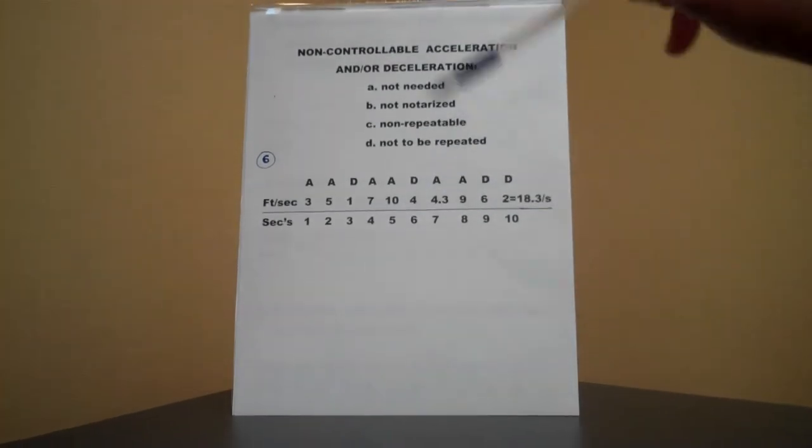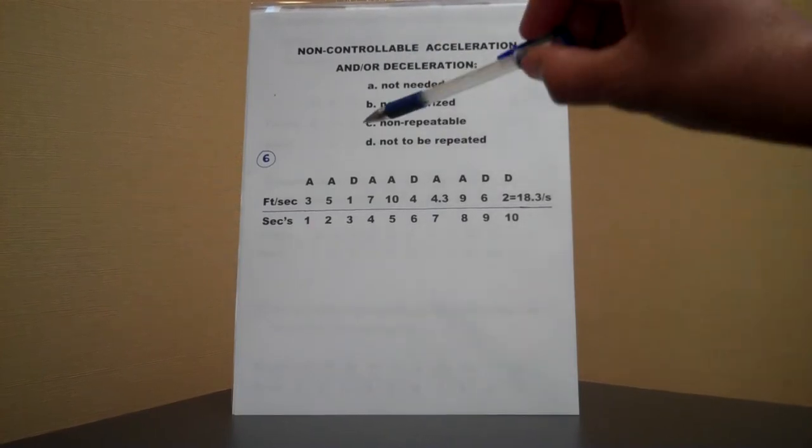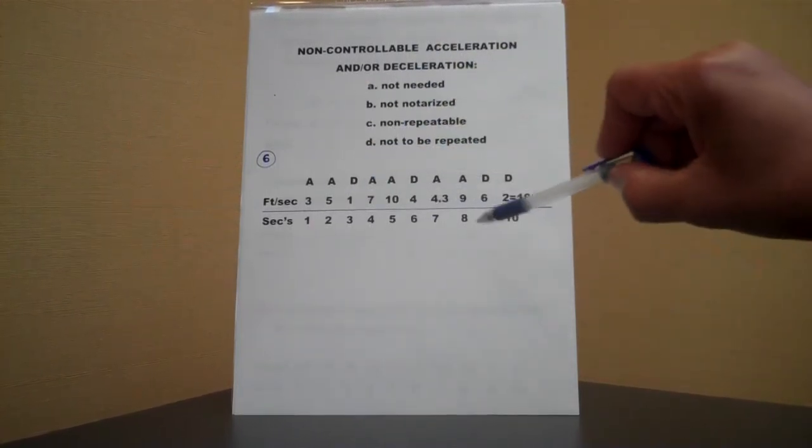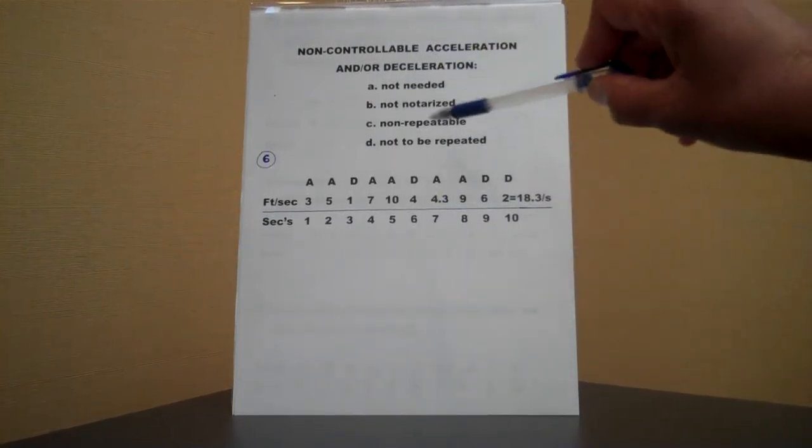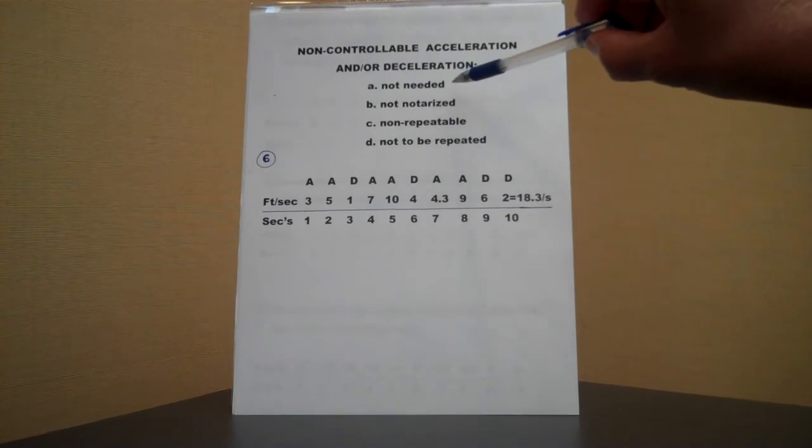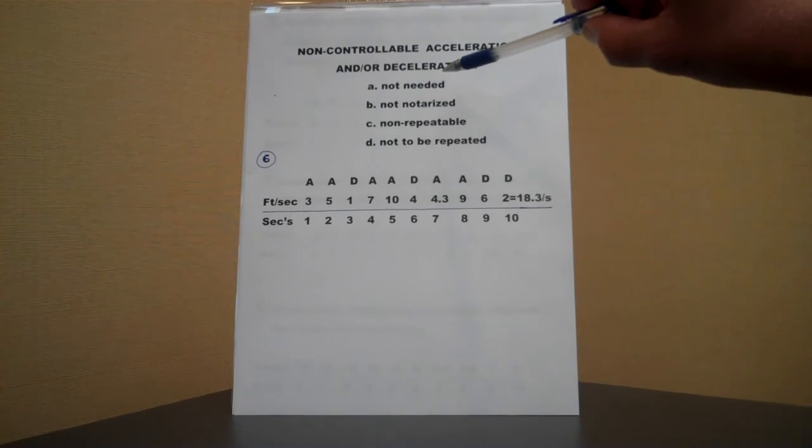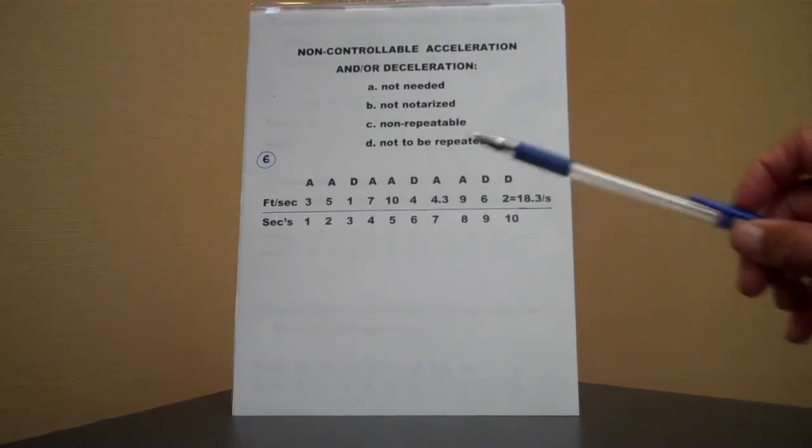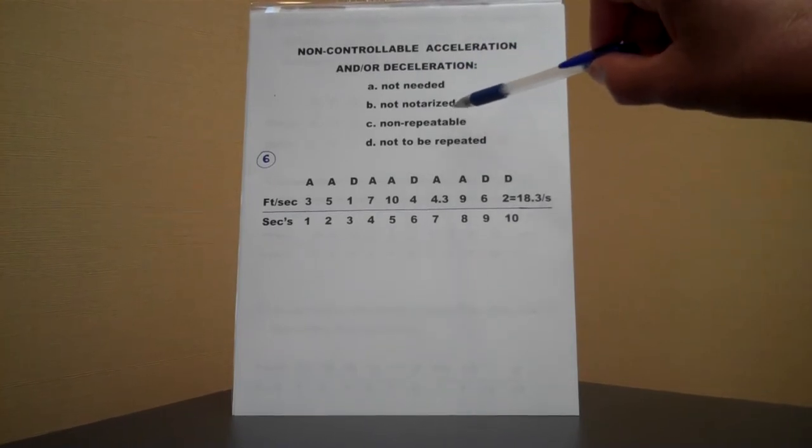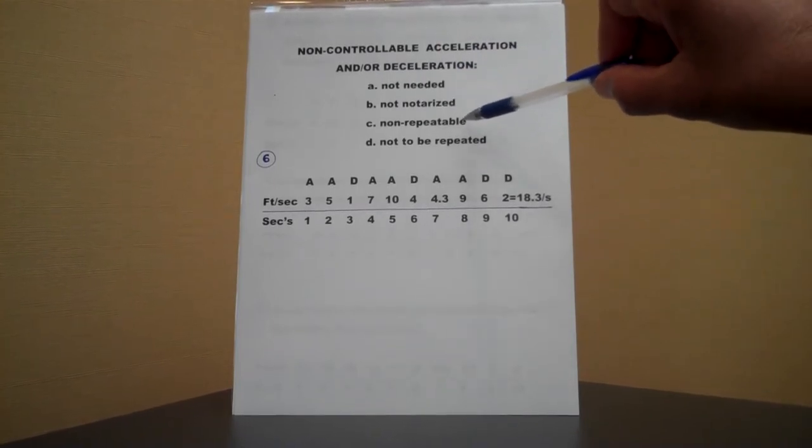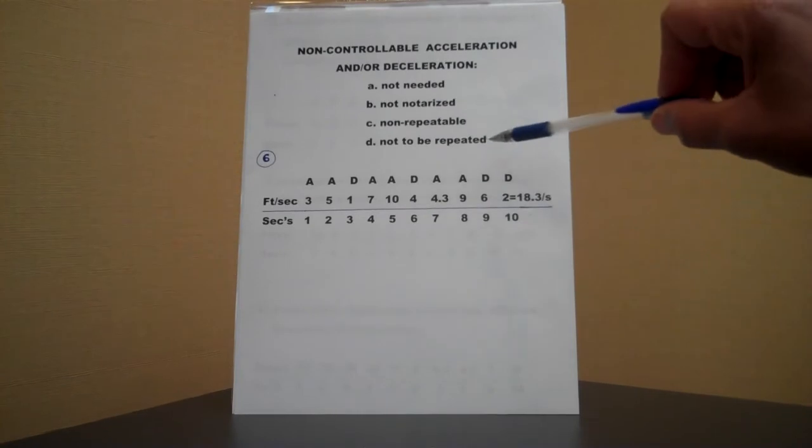Now, we will go to non-controllable acceleration and or deceleration, just as the pages you've seen before this one. This includes all of those, but in the case of, you do not need to know how you accelerated or how fast it was going, such as when you're talking and so forth, you're not really clocking it so much, you're not notarizing the exact amount of acceleration and deceleration. It's non-repeatable, because since you're not notarizing it, you'll never repeat it, and it's not to be repeated.